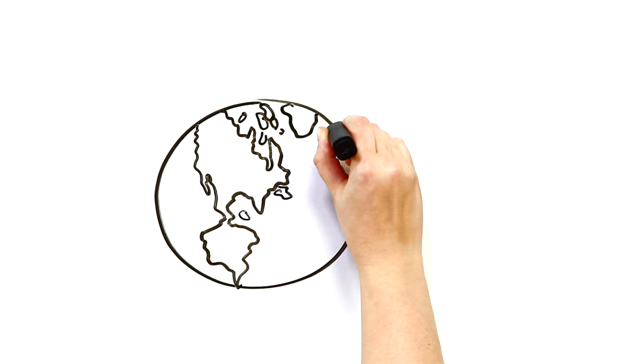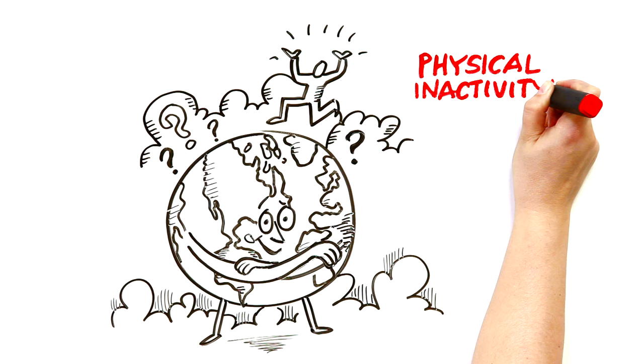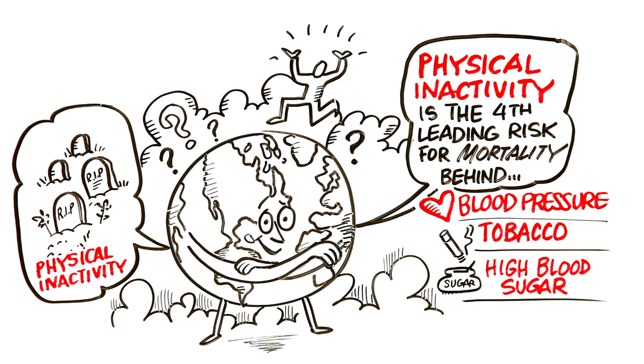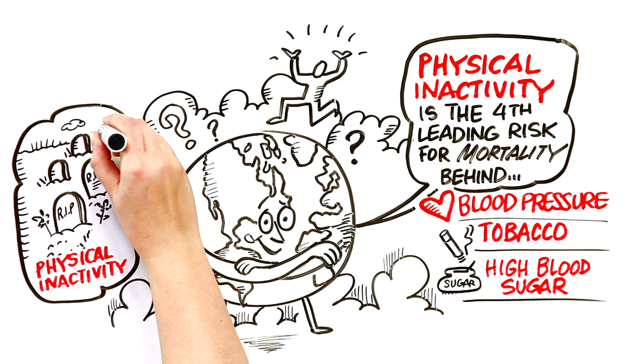But just how important is being active and healthy? Well, let's look. In the entire world, physical inactivity is the fourth leading risk factor for mortality behind high blood pressure, tobacco use, and high blood sugar. Physical inactivity is the main cause for about a quarter of all deaths caused by breast and colon cancer, diabetes, and heart disease.